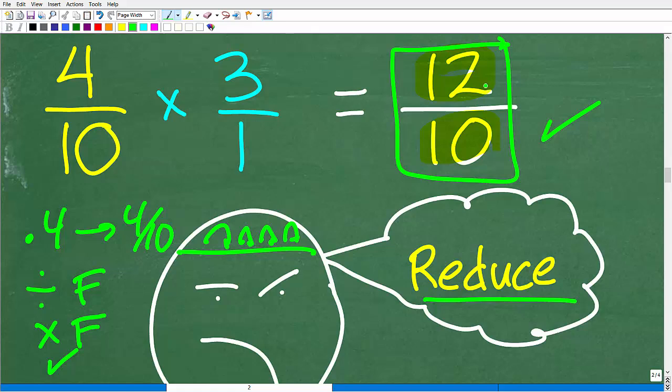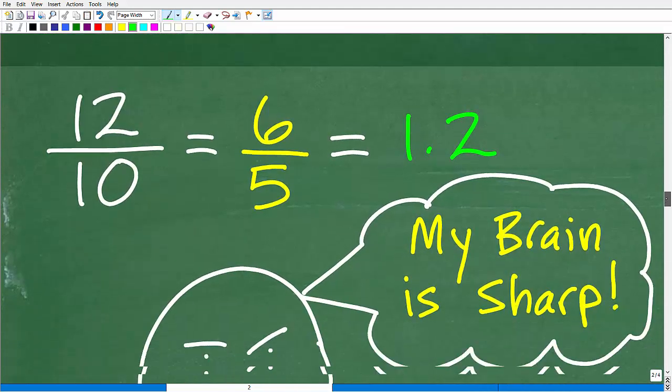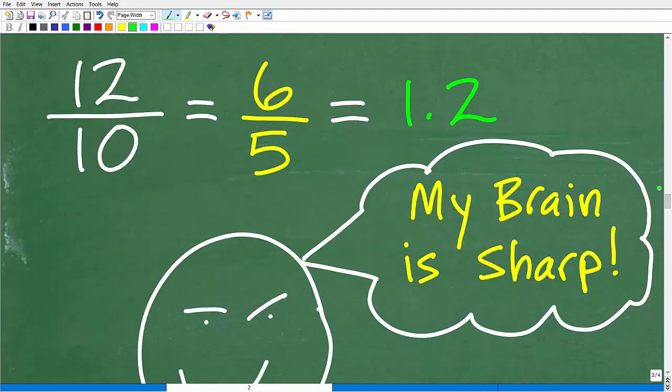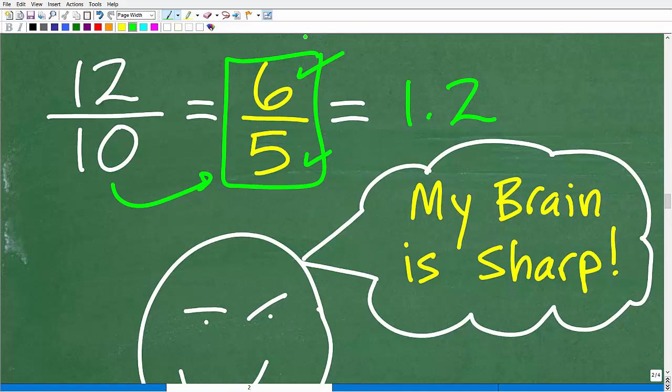At this point, you could choose to reduce. That would be the ideal thing because we can simplify this fraction. So 12 over 10, 2 goes into 12, 6. 2 goes into 10, 5. So this would be great. Some of you might say, 12 divided by 10, if you're good with decimals, that's the same thing as 1.2.